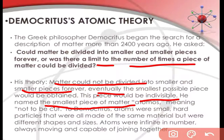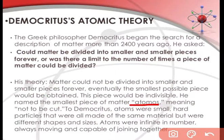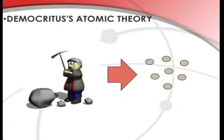This smallest piece of matter, he named it. The smallest piece of matter is known as atomos, meaning not to be cut. To Democritus, atoms were small, hard particles that were all made of the same material but were different shapes and sizes. Atoms were infinite in number, always moving, and capable of joining together.